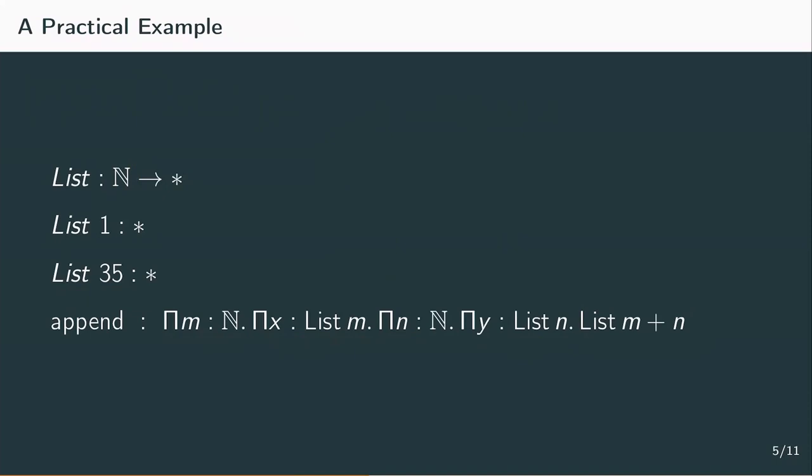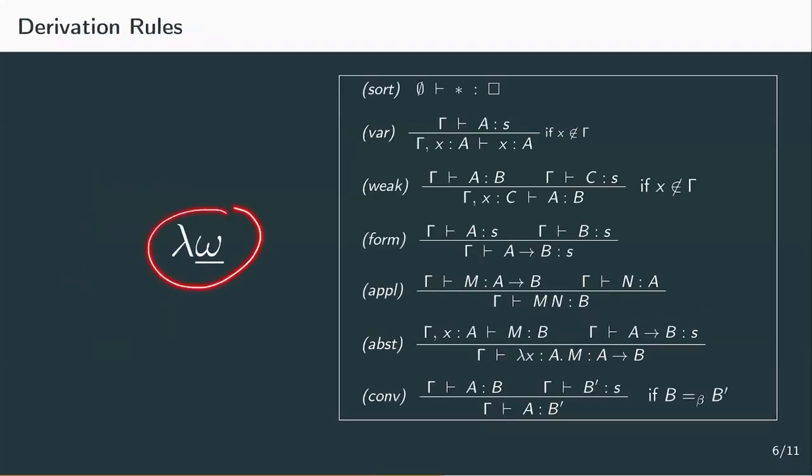Let's now look at the derivation rules for our new system lambda p that includes dependent types. We're going to start with the rules from the system lambda weak omega and change a few to get lambda p. In fact, there's only a few minor adjustments required. Types depending on types needs to go and types depending on terms needs to be introduced.